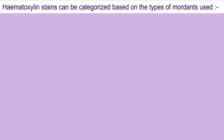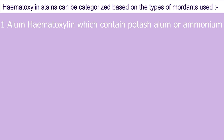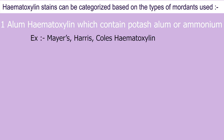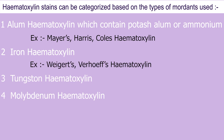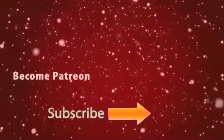Haematoxylin stain can be categorized based on the type of mordant used, such as alum haematoxylin, which contains potassium or ammonium; iron haematoxylin; tungsten haematoxylin; molybdenum haematoxylin; and lead haematoxylin.